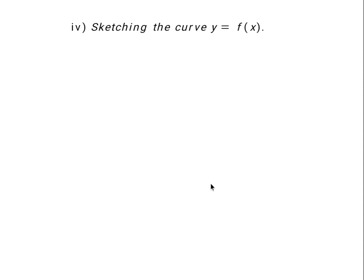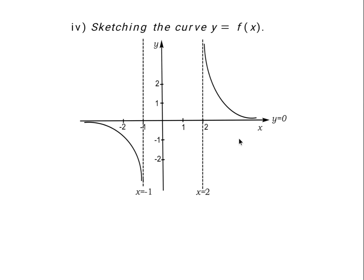Now we move to the sketch of the curve. The line y equals 0, which is the x-axis, is the horizontal asymptote. There are vertical asymptotes at x equals negative 1 and x equals 2, shown as dotted lines. The table of variation tells us that in the region between negative infinity and negative 1, the graph decreases from the neighborhood of 0 moving towards negative infinity to the left of the vertical asymptote. In the region between 2 and positive infinity, the graph decreases from positive infinity down to the neighborhood of 0, the horizontal asymptote. This is the graph in its entirety.